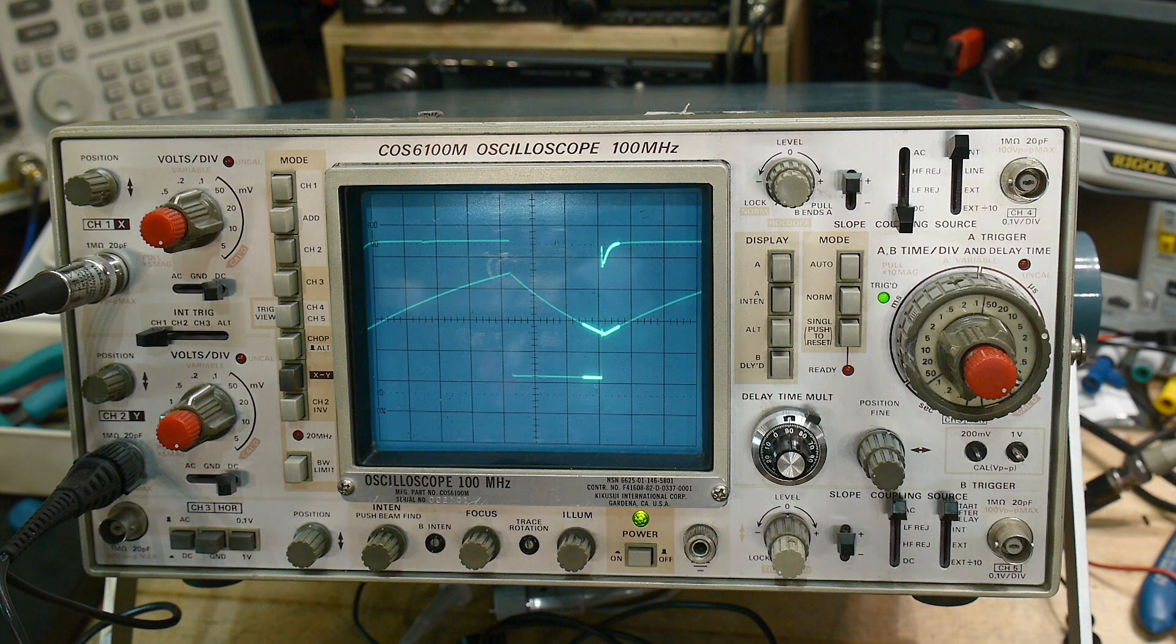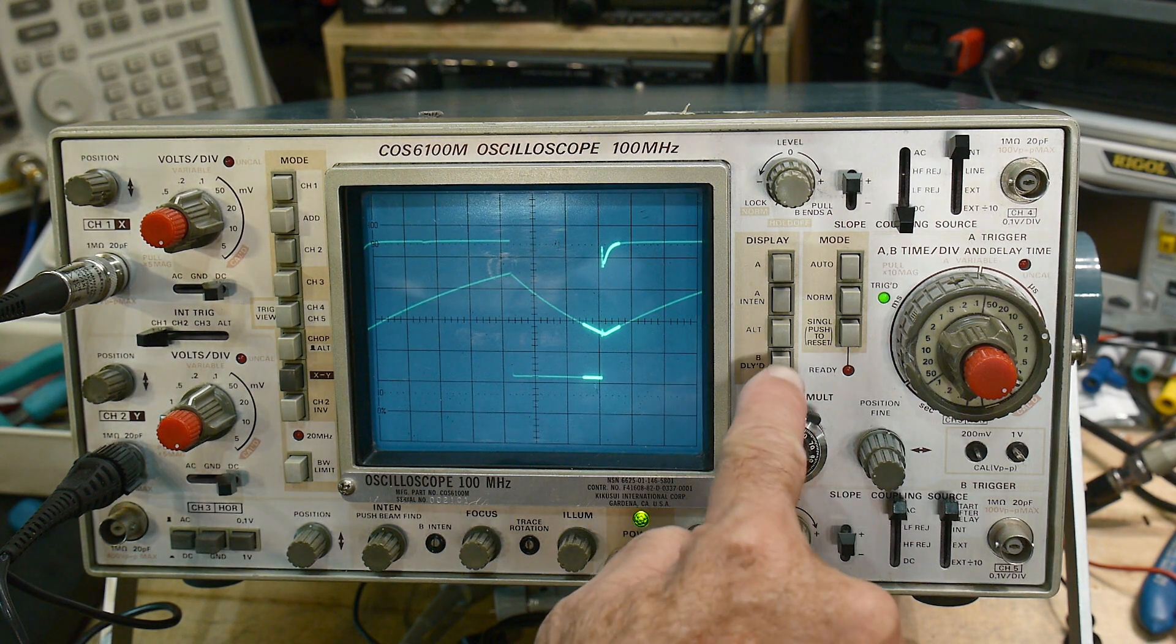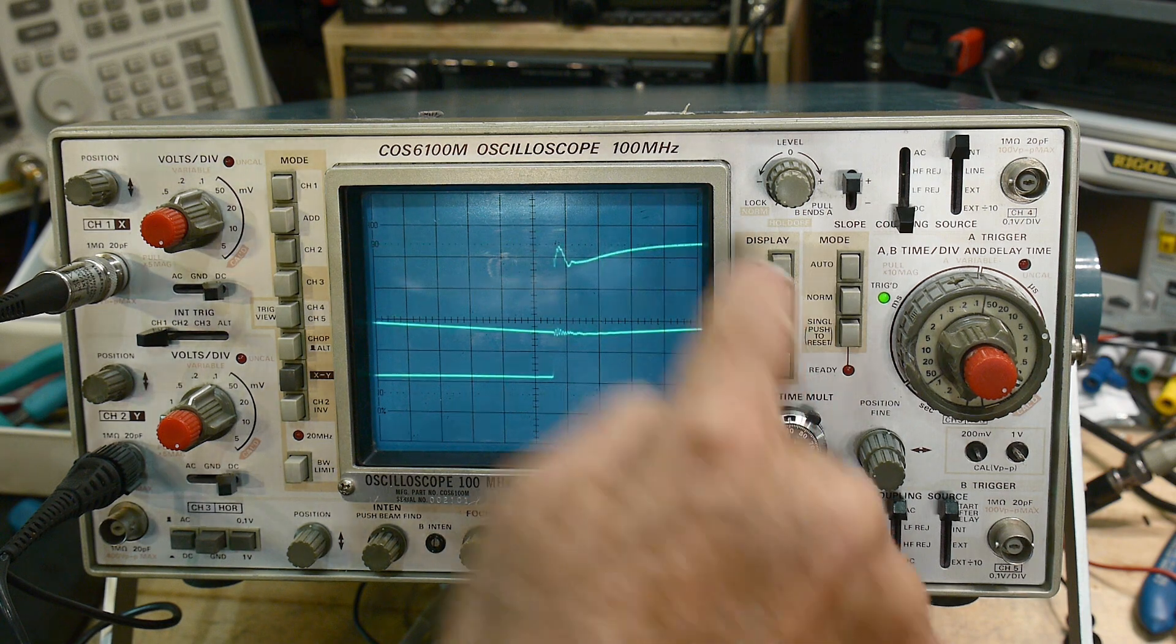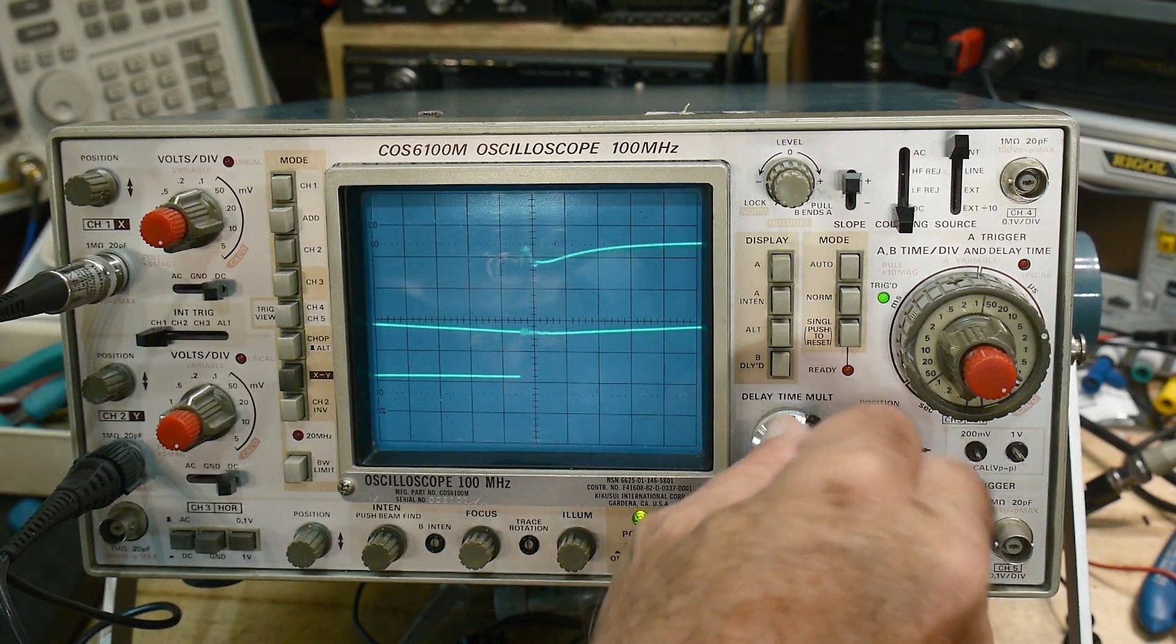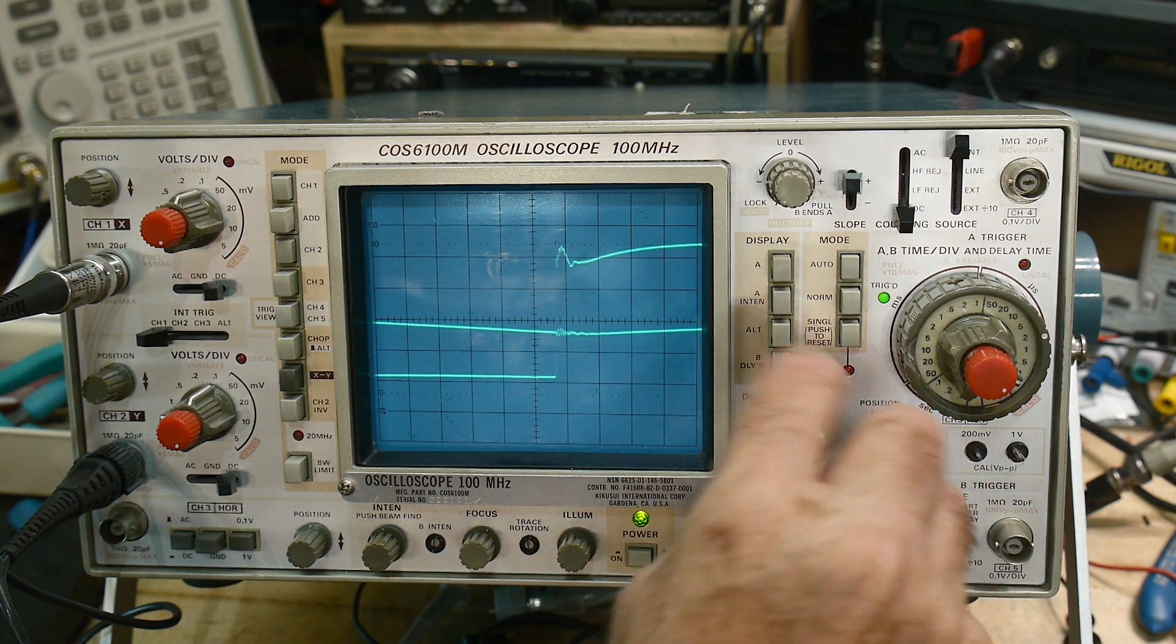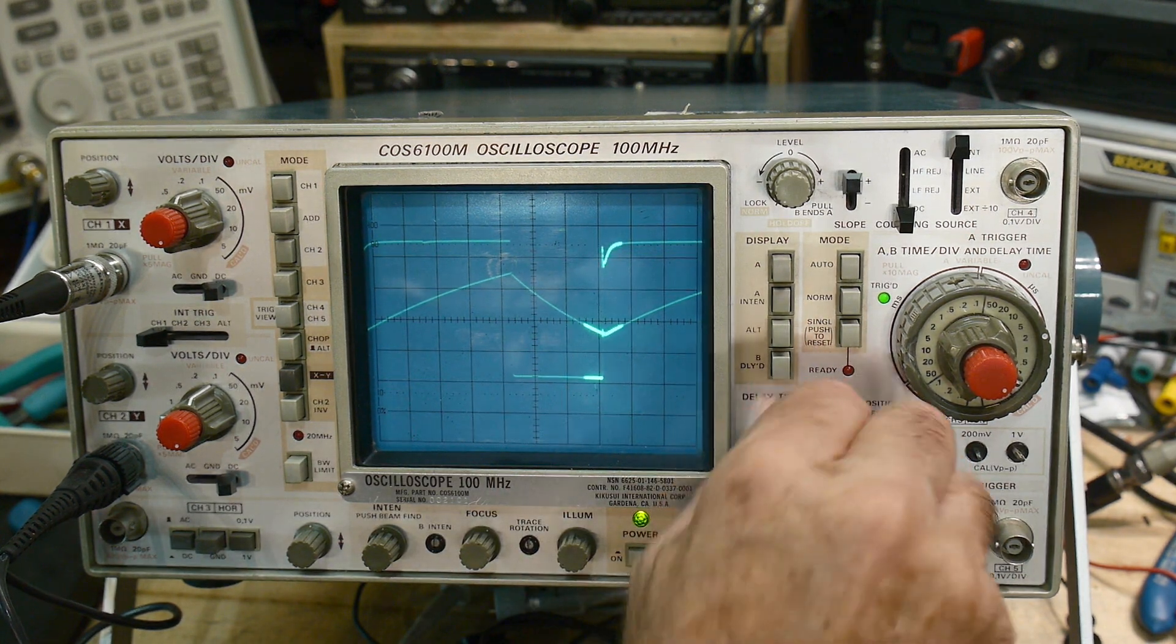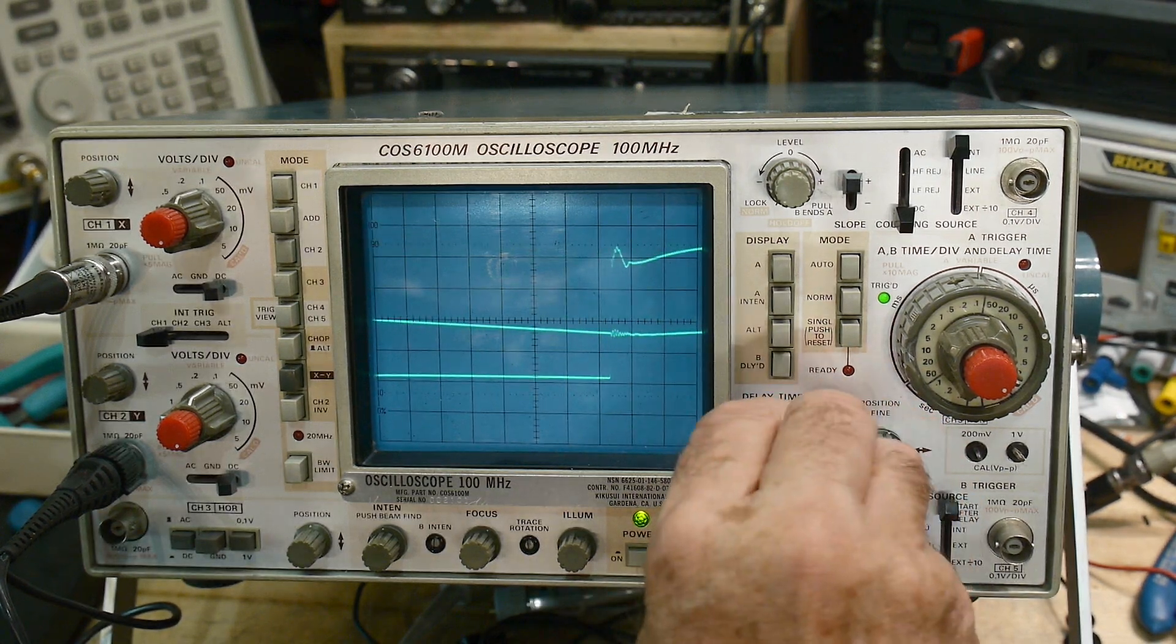And then if we want the zoom to happen, then we hit the B button. And there it is. There's our zoom. And we can move, we can still move it back and forth. But remember, we're zooming in on that one little area there. So we're going to zoom in on this and that's where we're zoomed in.